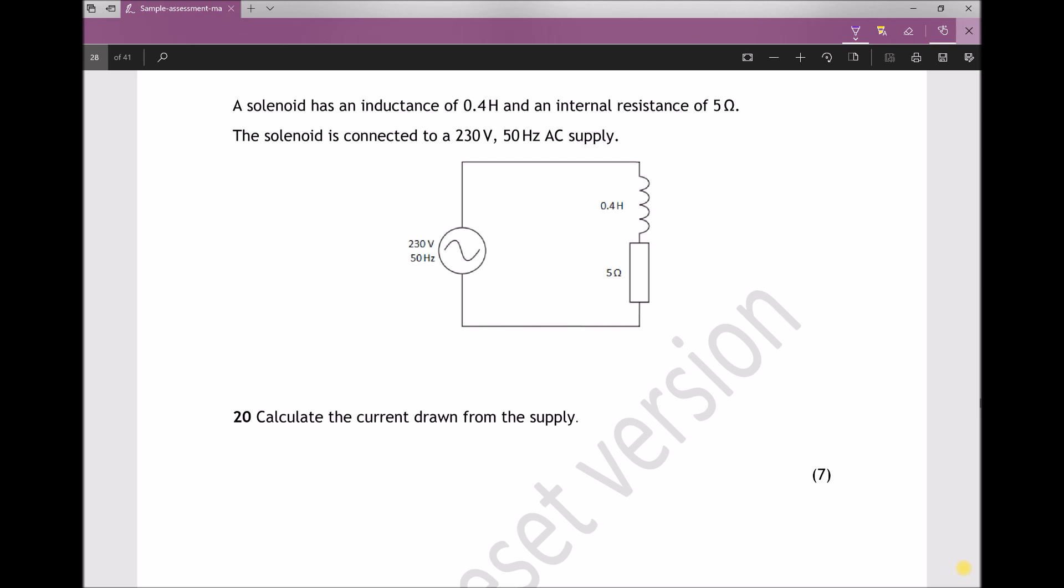Now in the diagram, the solenoid has been represented as an inductor and a series resistor, so that's to represent the internal resistance as well as the inductance of the solenoid. And we are asked to calculate the current drawn from the supply.